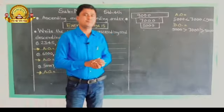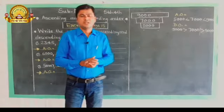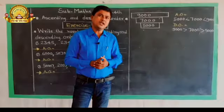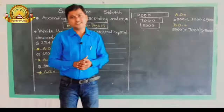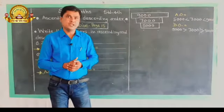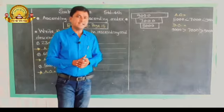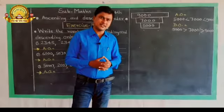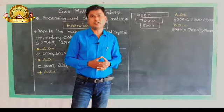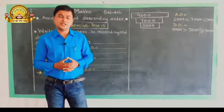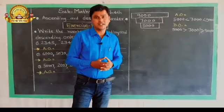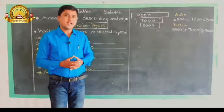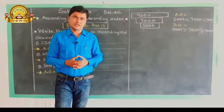Hello friends, how are you? Last period we learnt about comparing numbers. Today we are going to the next step of comparing numbers, that is ascending order and descending order. We are going to compare using the same order and smaller-bigger symbols, and examples we have solved. Today we are going to learn ascending order and descending order.